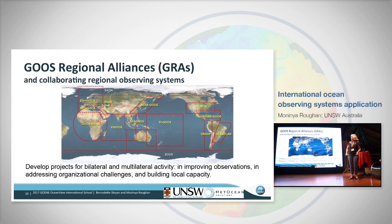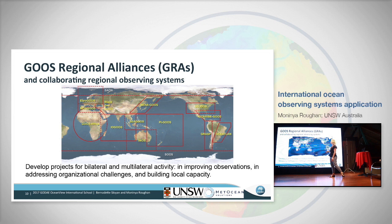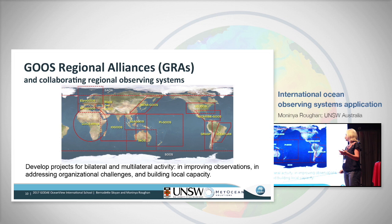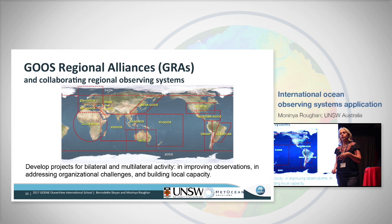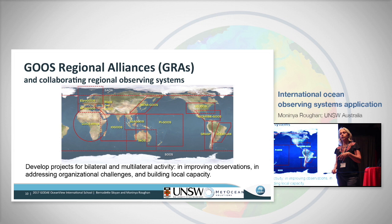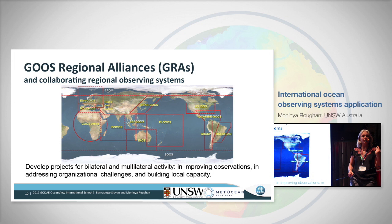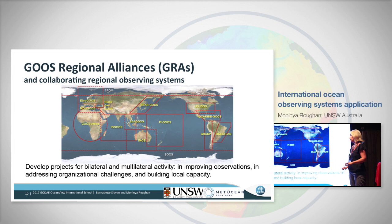Within the GOOSE framework there are a bunch of global regional alliances. This map, centered on Australia, shows the names of regional alliances that have got together to coordinate regionally focused projects for bilateral and multilateral activity to improve ocean observing capability. They've coordinated exercises in their coastal and large-scale oceans, and worked together to develop frameworks, quality control procedures, and manuals to improve the system and raise the bar for everybody.